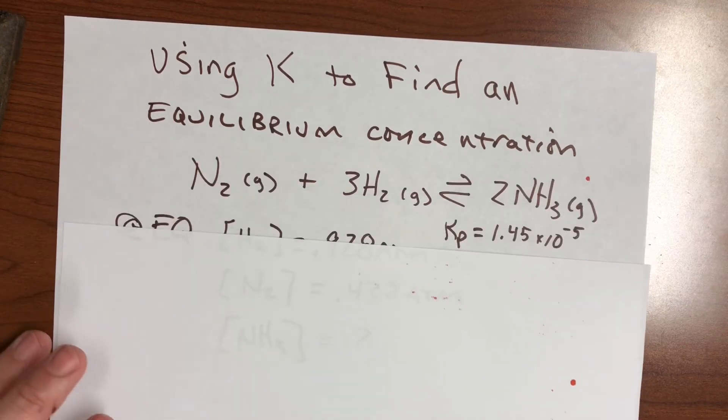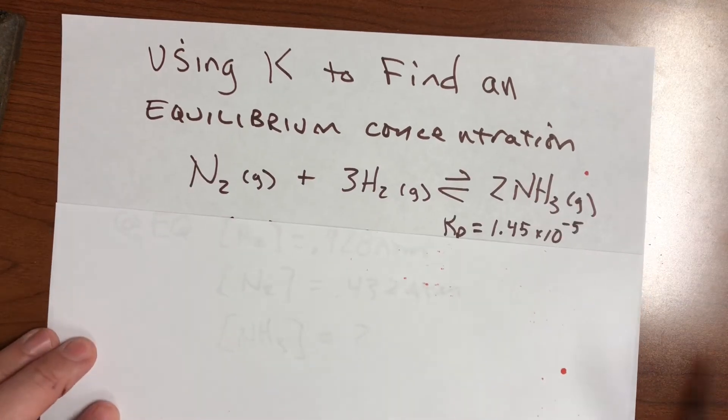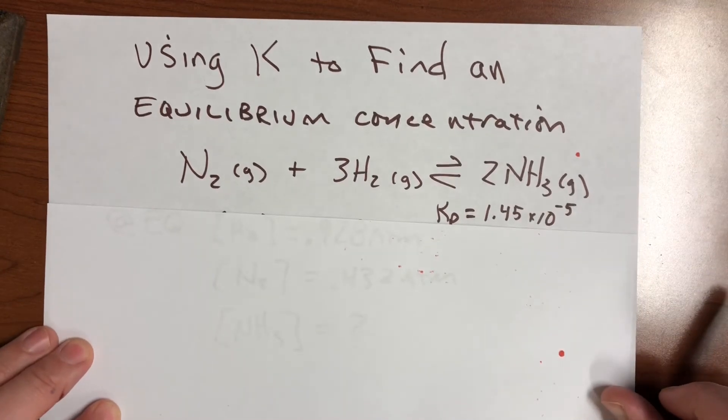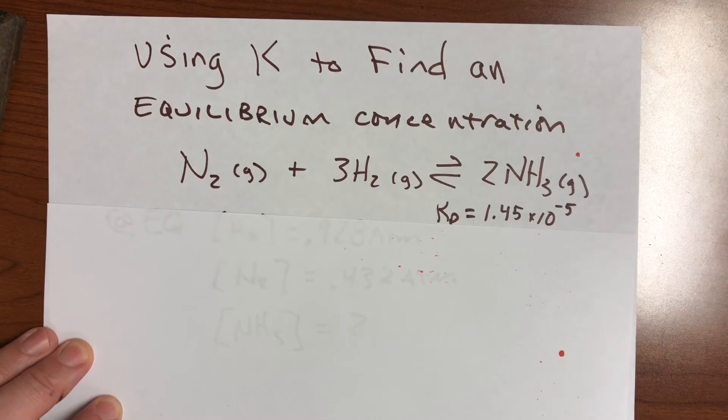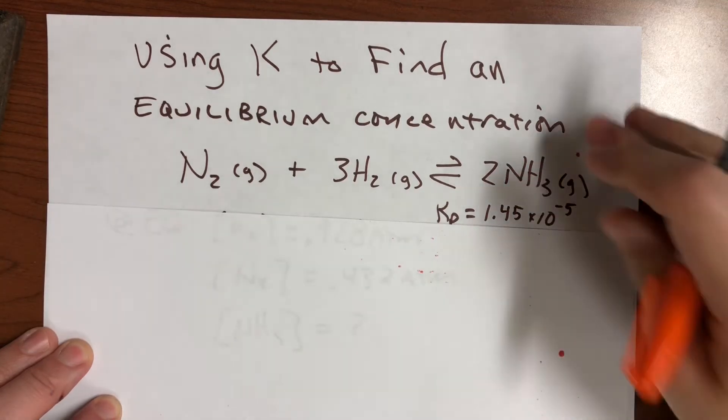So here's how we're going to do that. Here's our reaction. We have nitrogen. This is the Haber-Bosch process. We have our nitrogen gas and hydrogen gas in equilibrium with ammonia gas, and we have that tiny K because this is a hard process to make happen.